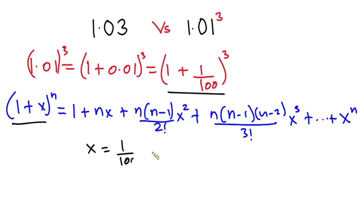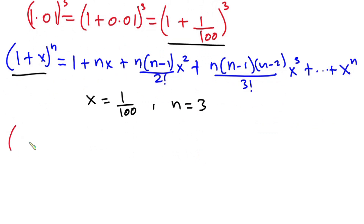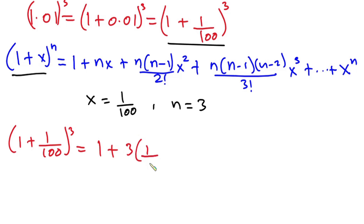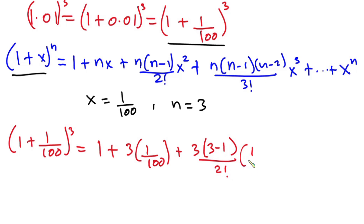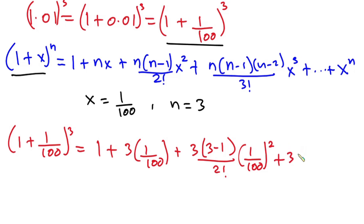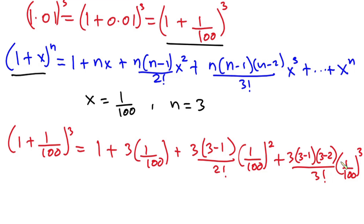So x equals 1 over 100 and n equals 3. This means (1 + 1/100)³ equals 1 plus 3·(1/100), plus 3(3−1) over 2! times (1/100)², plus 3(3−1)(3−2) over 3! times (1/100)³.